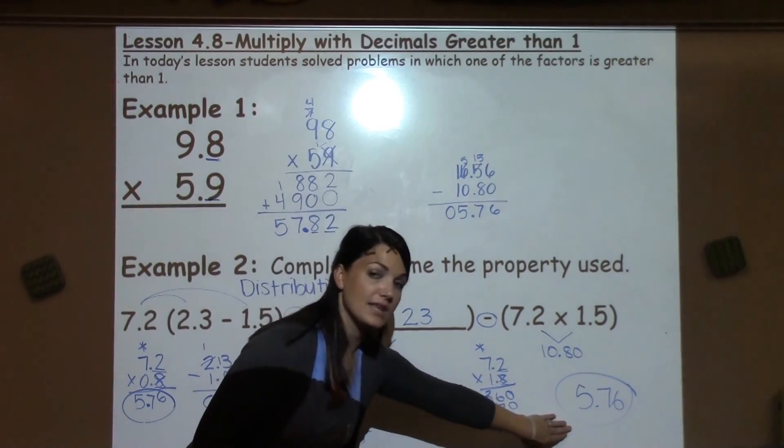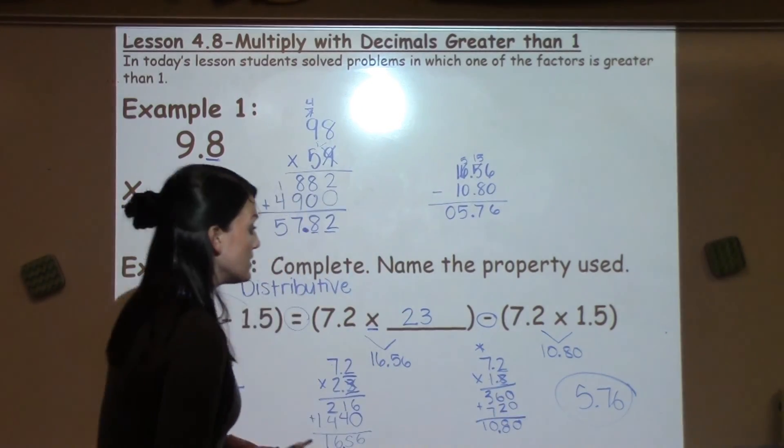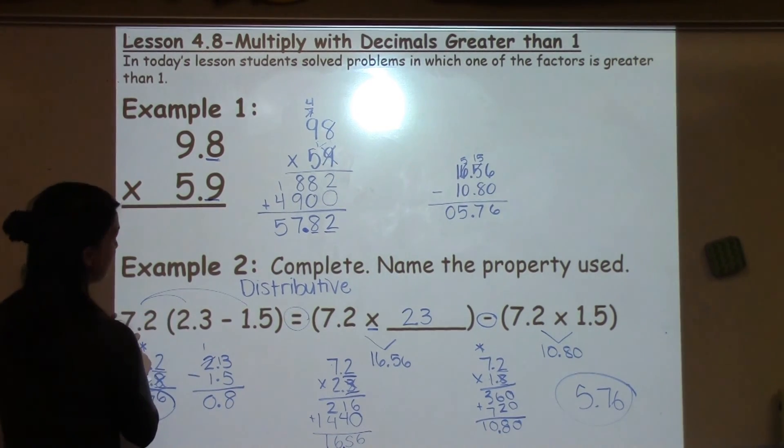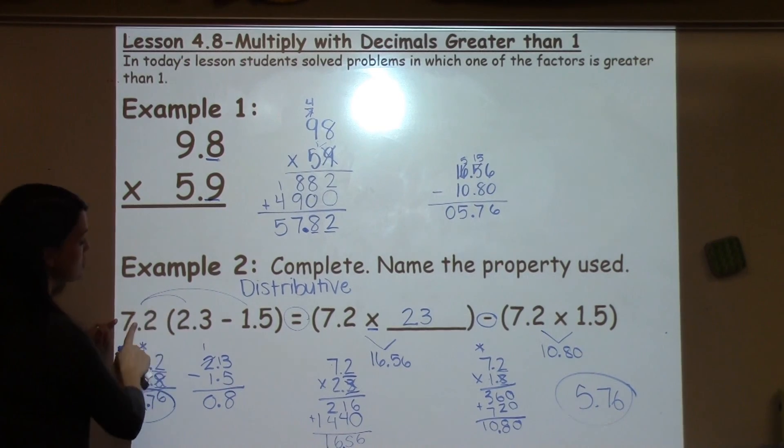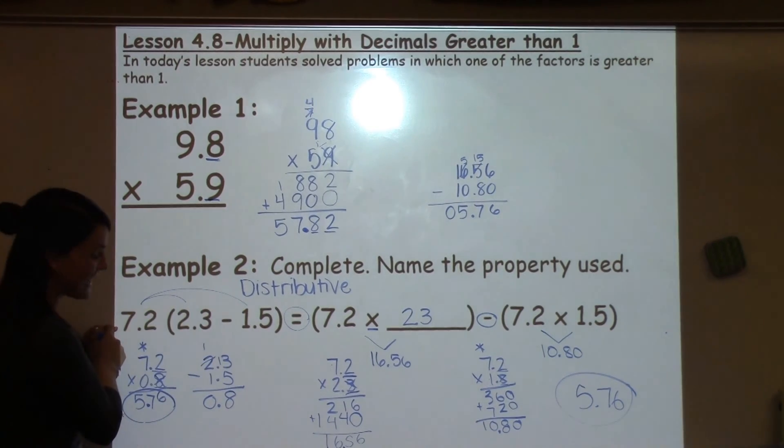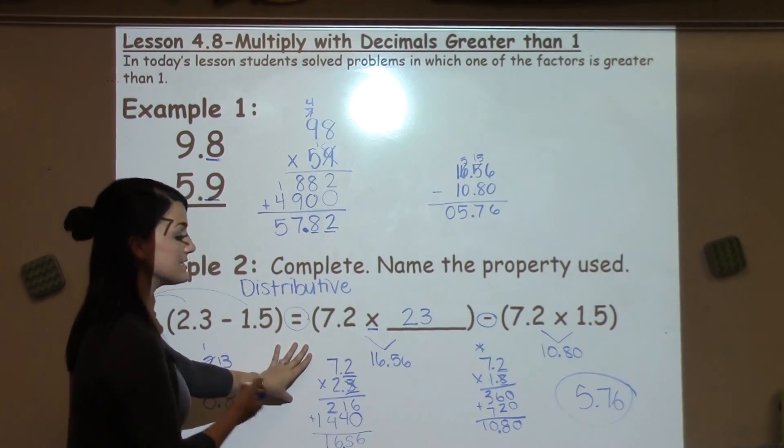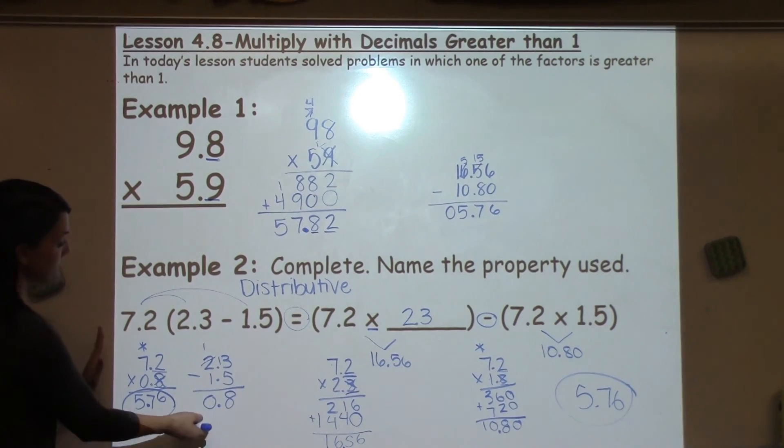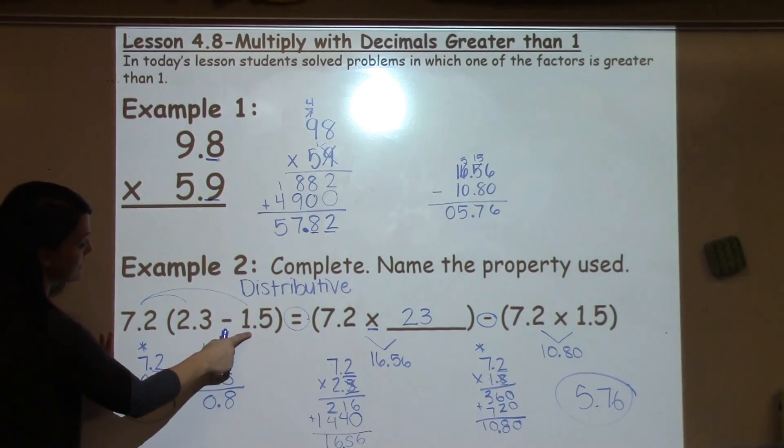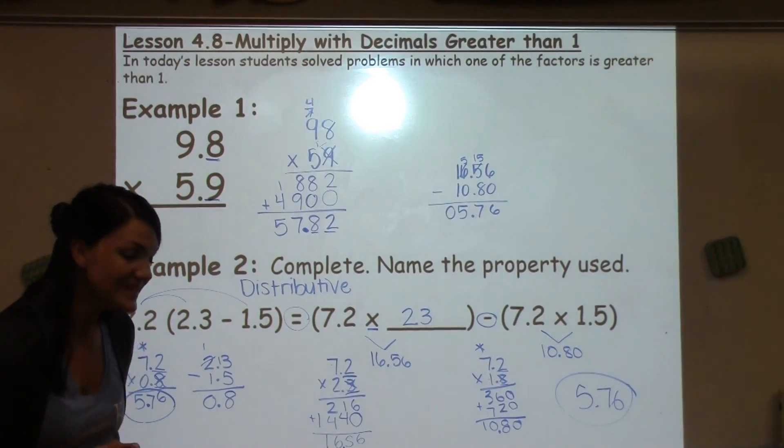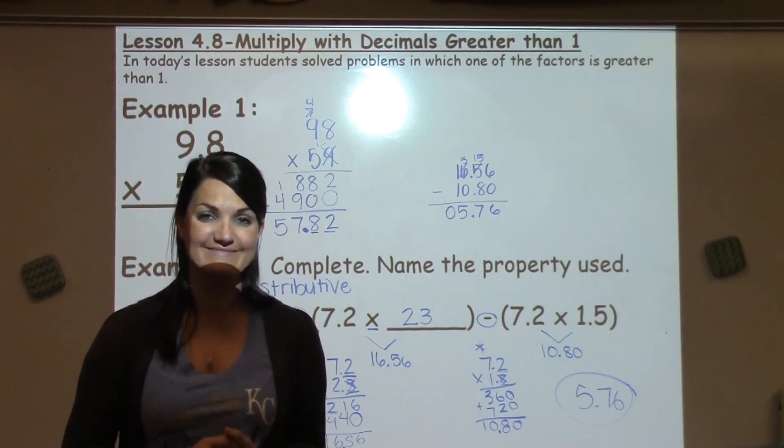So we use the distributive property to show students that this is the same as the 7.2 distributing itself, multiplying by the numbers on the inside. And yes, you can solve it that way, but it takes a few more steps. If you just solve the problem inside the parentheses and then multiply, you will get the same answer. If you have any questions about this lesson, make sure to see your math teacher.